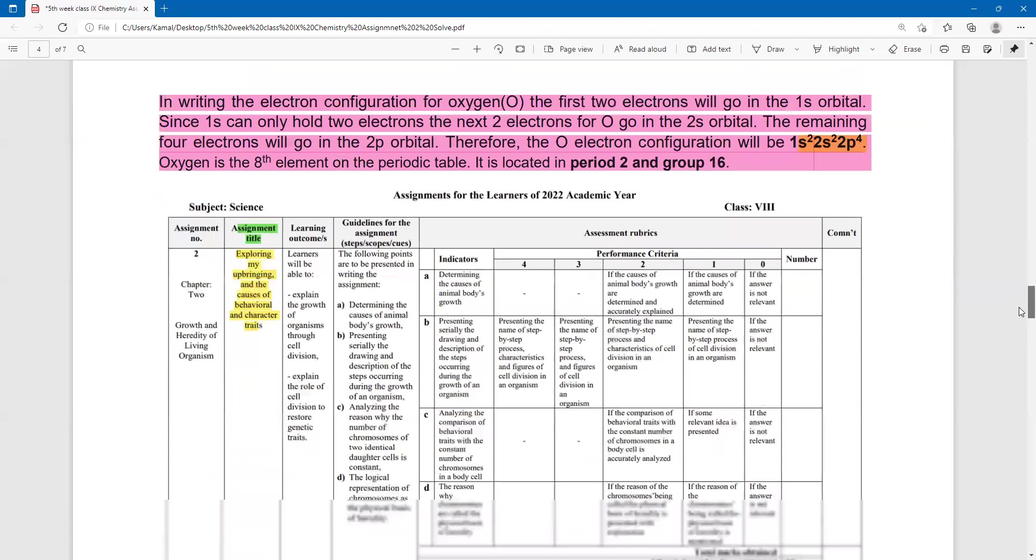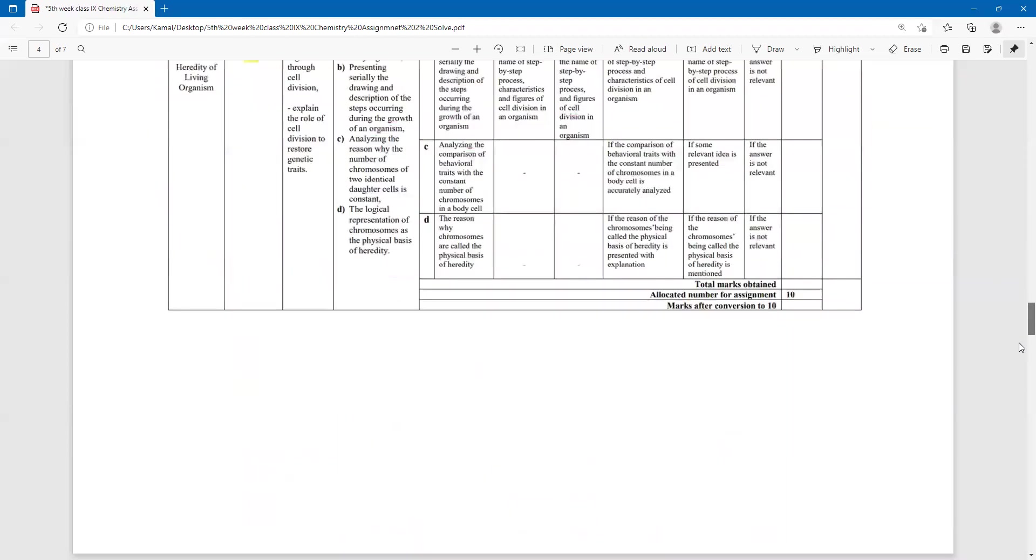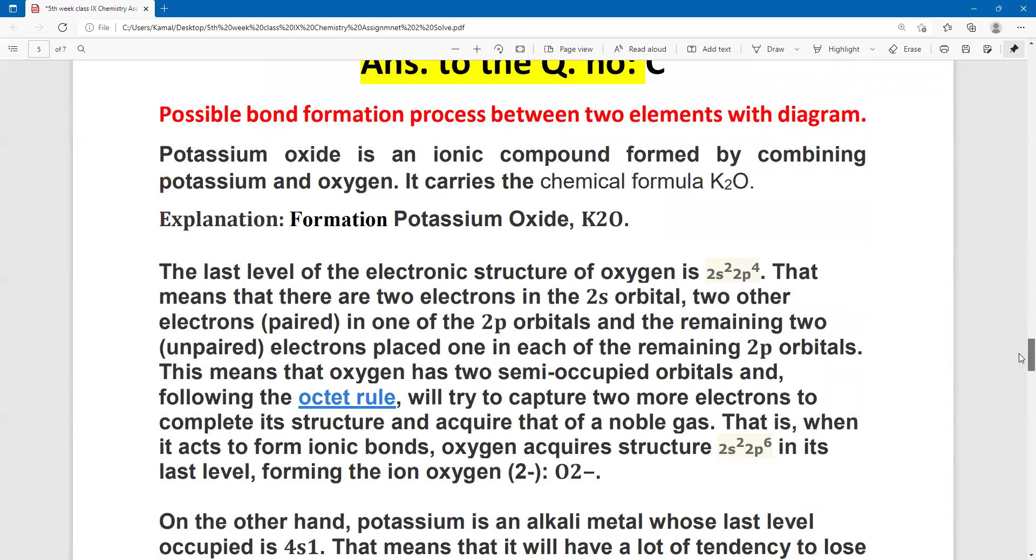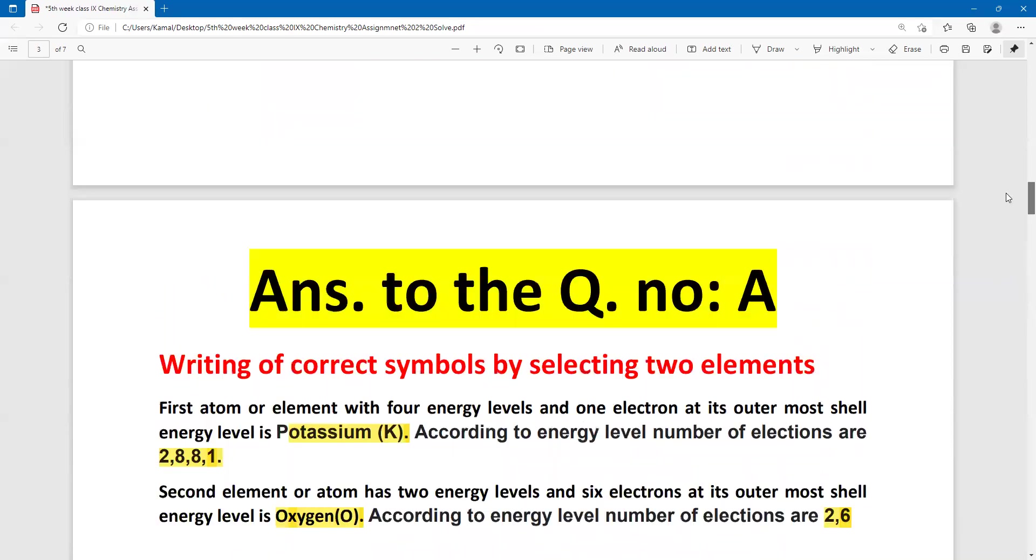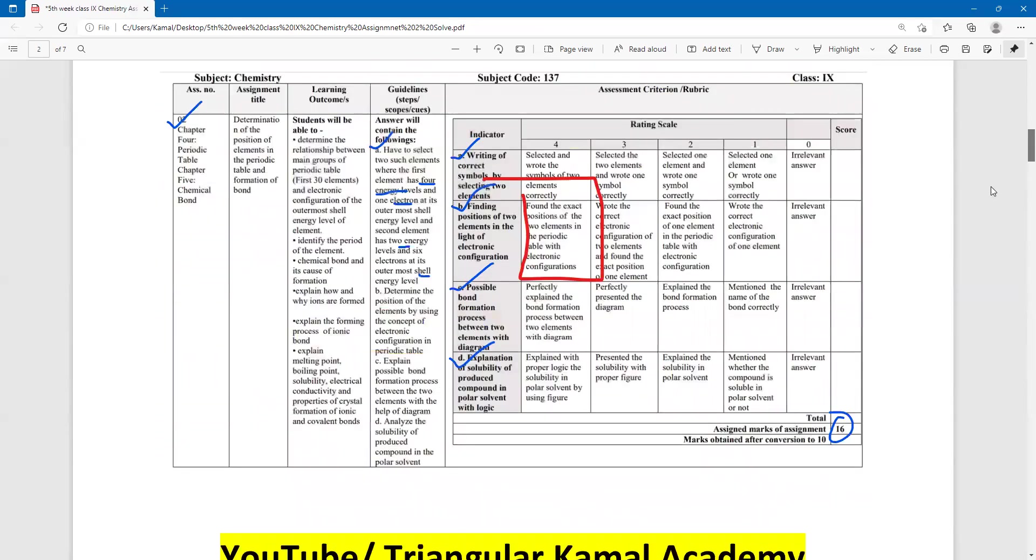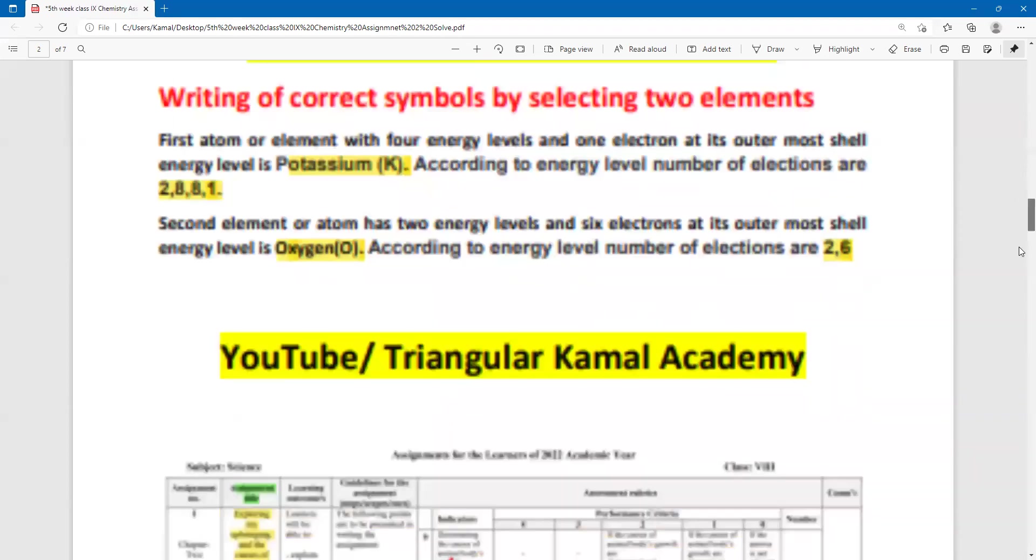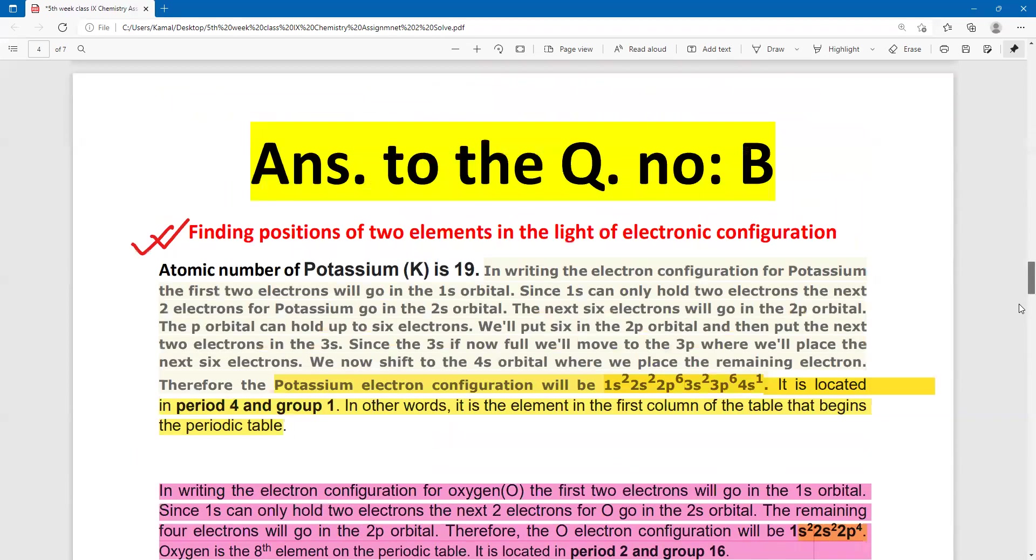Now the third question is the bond formation process between two elements with the diagram. So this is the two elements by atom we have to identify. How is the chemical formation? We can explain in the figure and show how we can show. So this is the question.